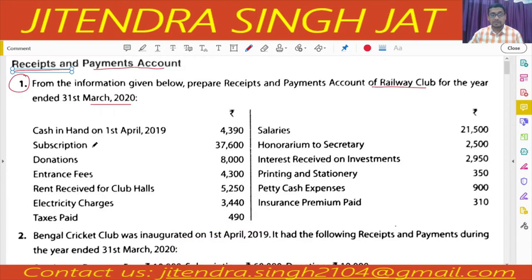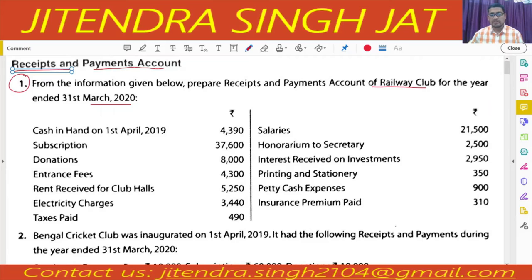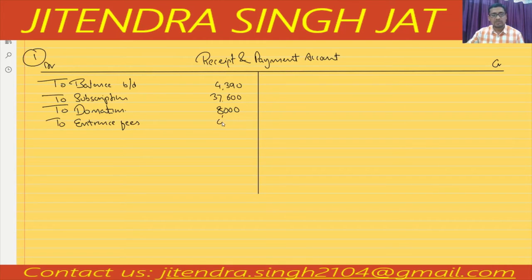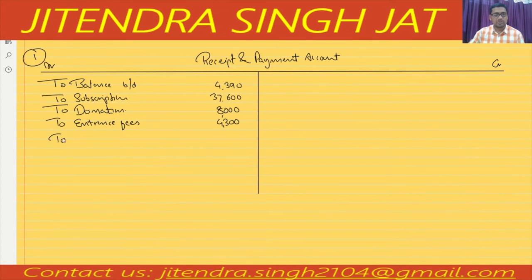Subscription goes on the received side — that is the debit side — 37,600. To subscription: thirty-seven thousand six hundred. Donation received: eight thousand. To donations: eight thousand. Entrance fees: four thousand three hundred. Rent received from the hall — to rent received: five thousand two hundred and fifty.